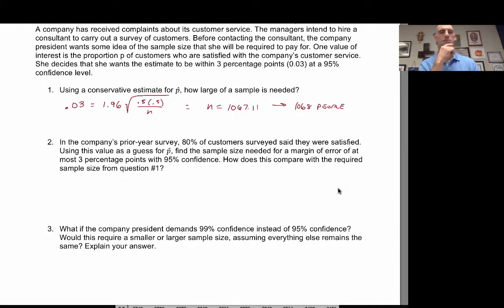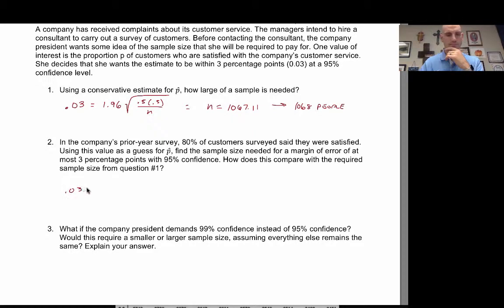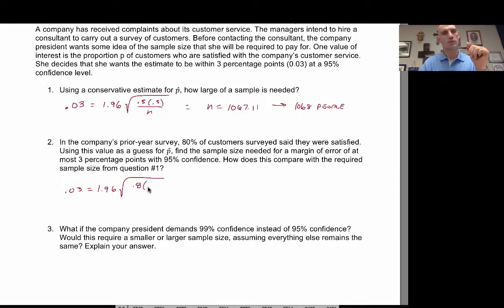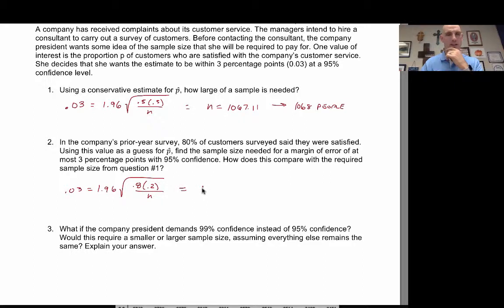In the company's prior year survey, 80% of customers said they were satisfied. Using p-hat = 0.80 instead of the conservative 0.5 estimate, set up: 0.03 = 1.96 × √(0.80 × 0.20 / n). Solving gives n = 682.95, which rounds up to 683 people — a smaller sample than the conservative estimate.